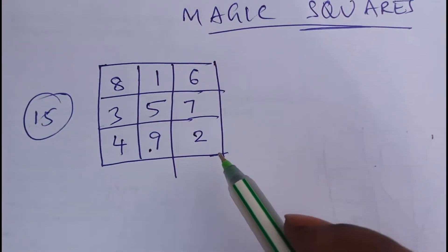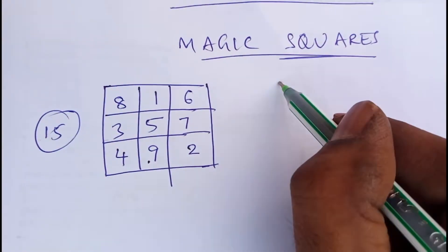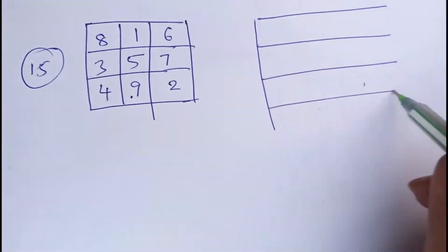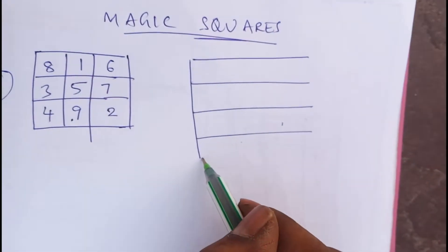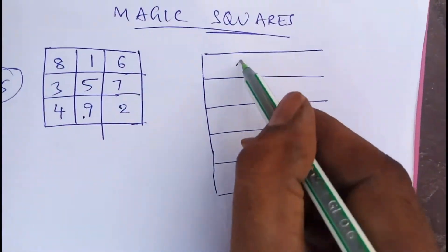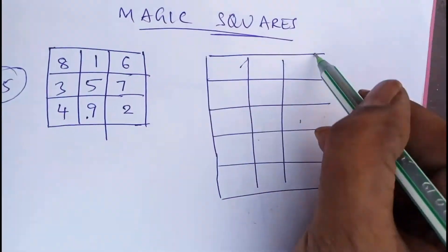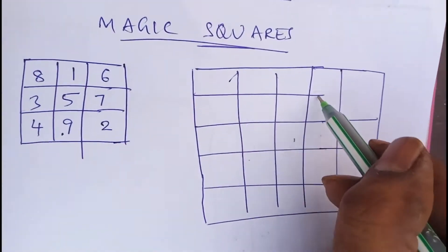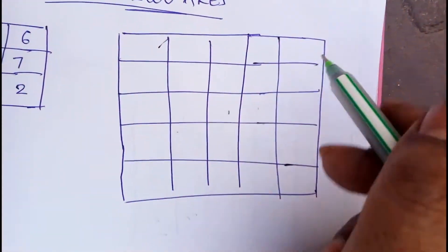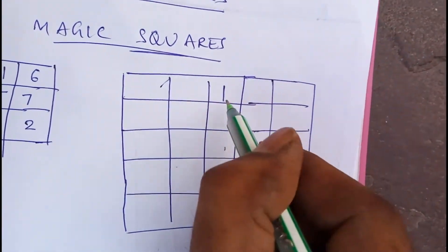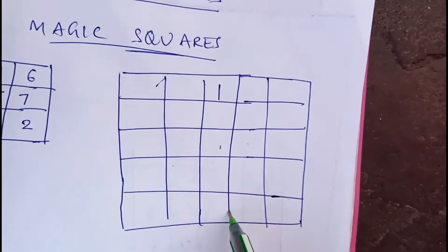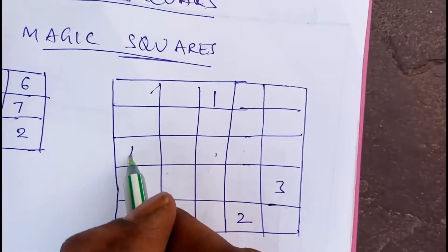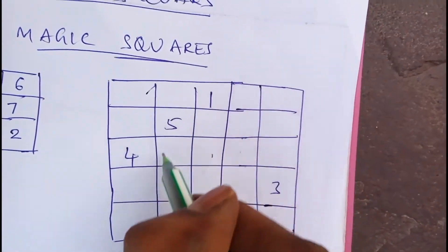This is the three-by-three magic square. If you take a five-by-five square, you apply the same technique. Here is a five-by-five grid with twenty-five boxes. You apply the same logic: first place one, then go up and to the right for two, up and right for three, up and right for four, up and right for five.